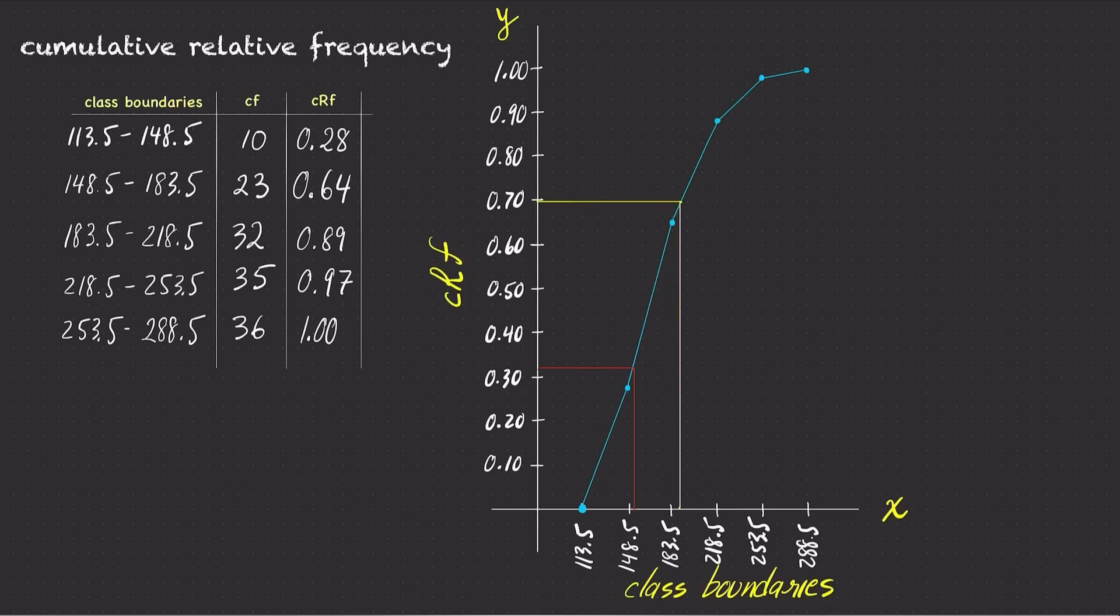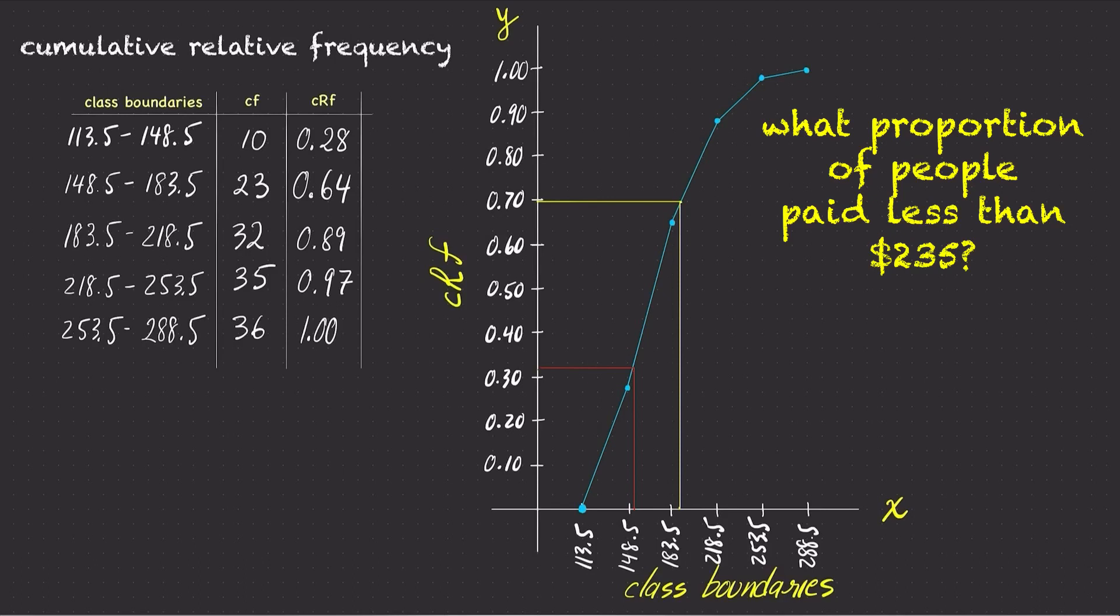Based on the cumulative relative frequency polygon you have copied on your paper, what is the proportion of people who would pay less than $235 for the health insurance premium?